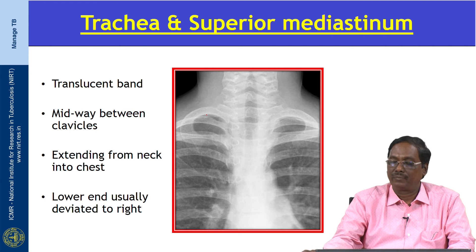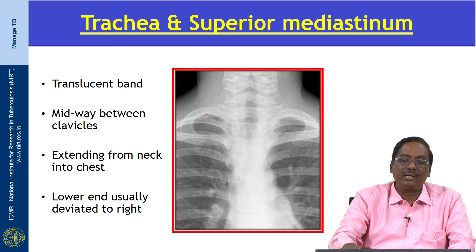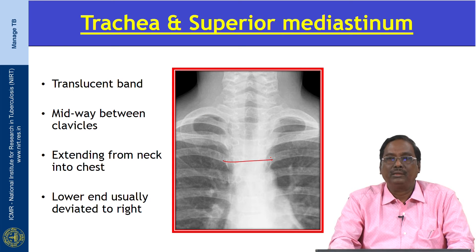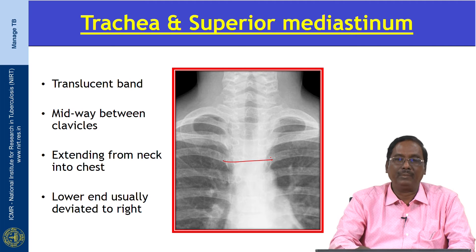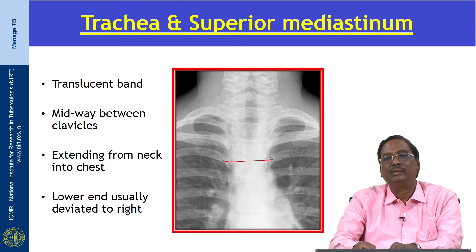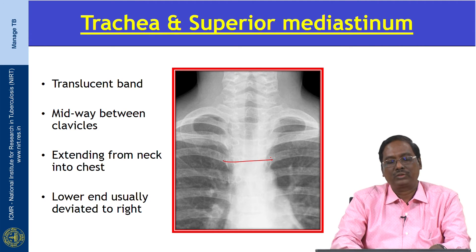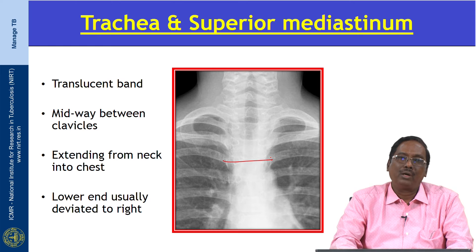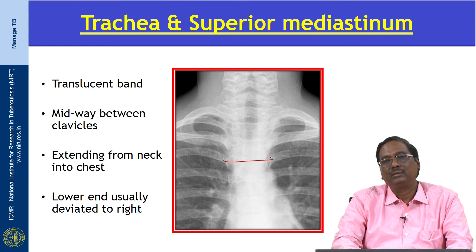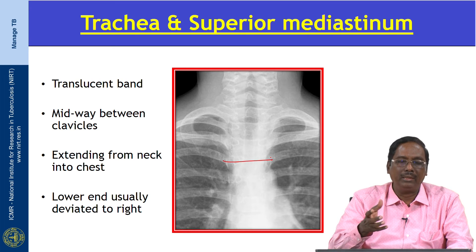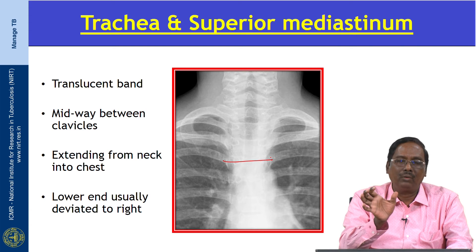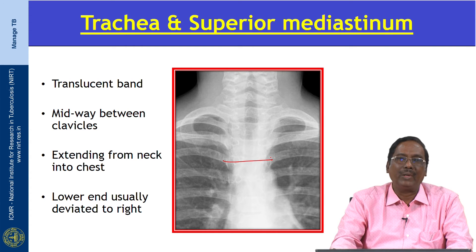The mediastinal width is also important. The upper mediastinal width should not exceed 6 centimeters. If it is more than 6 centimeters, you have to suspect whether it is an AP view, mediastinal enlargement, an aortopulmonary window abnormality, or unfolding of the aorta — all of which will lead to widening of the upper mediastinum.